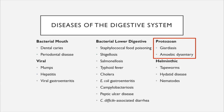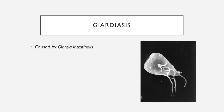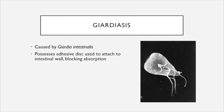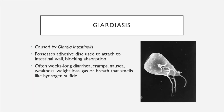We've almost made it to the end. All we have left are the parasites: the protozoans and the helminths. There are two protozoans: Giardia and amoebic dysentery. Giardiasis is caused by Giardia intestinalis, a protozoan that possesses a special adhesive disc used to attach to the intestinal wall, blocking absorption of nutrients and water. This leads to diarrhea lasting for weeks, cramps, nausea, weakness, weight loss, and gas that smells like hydrogen sulfide.